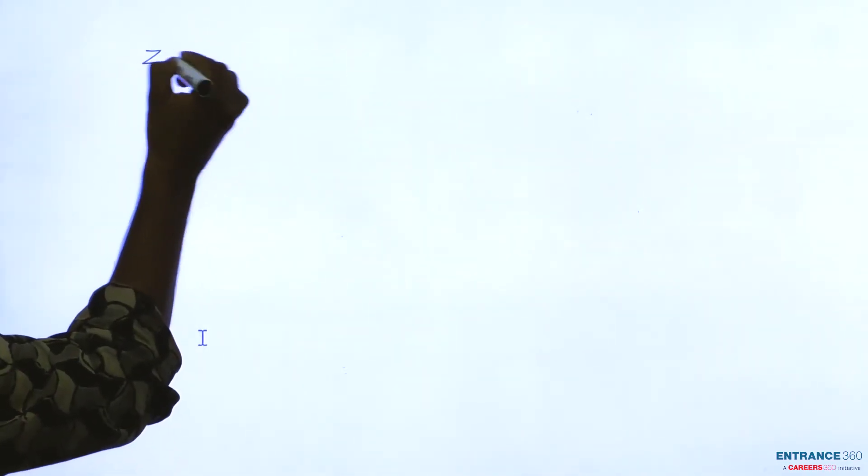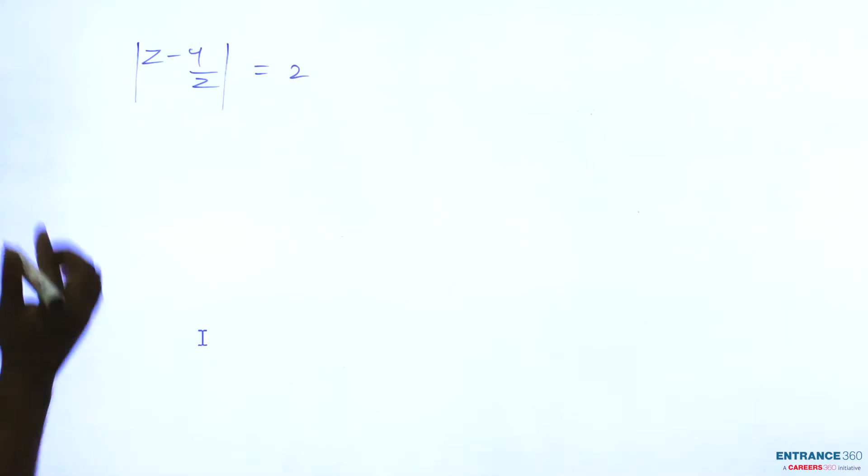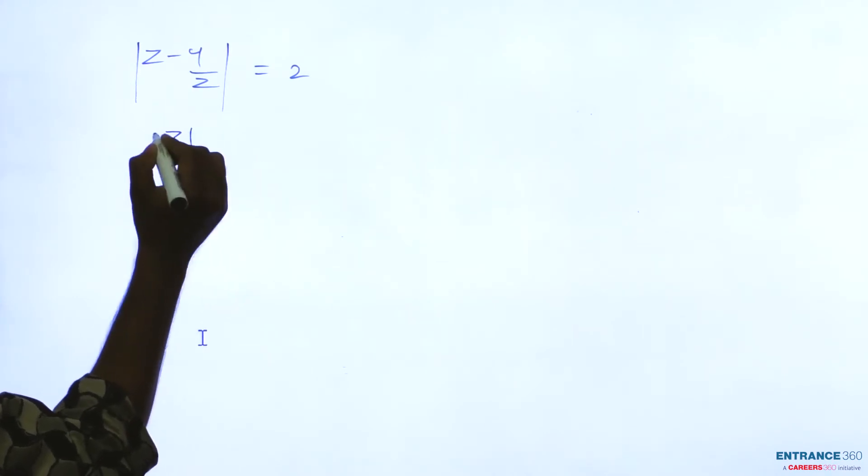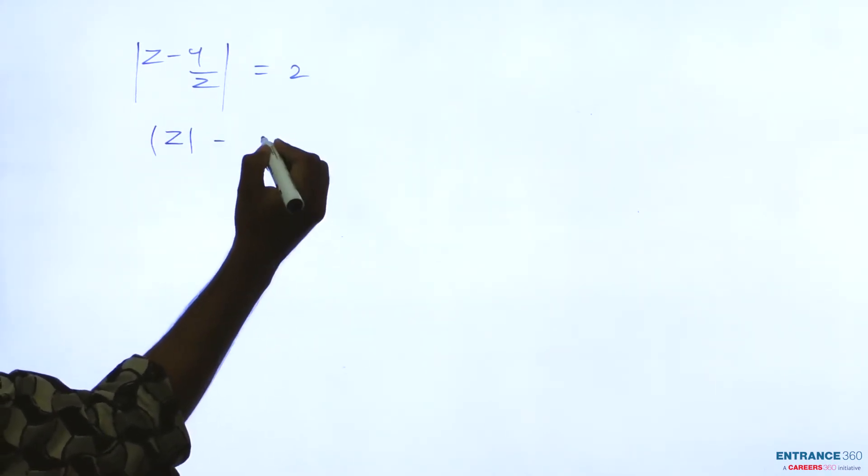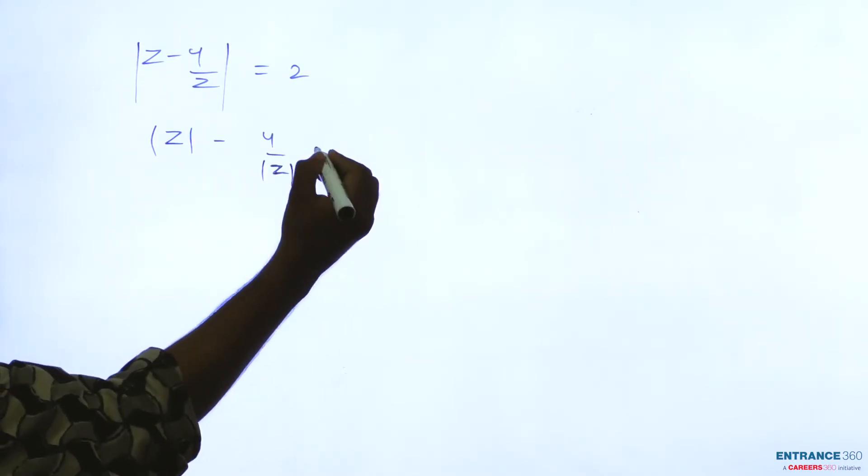This is given in the question. Then you can write by the triangle law of inequality, z minus 4 by z equal to 2.